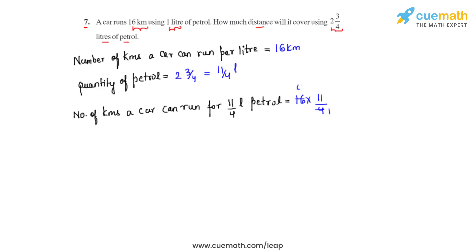So now 4 ones are 4, 4 fours are 16. Multiplying, we get the product as 44 kilometers. So the total distance that the car can cover using 2¾ liters of petrol equals 44 kilometers, and this is how we solve this question.